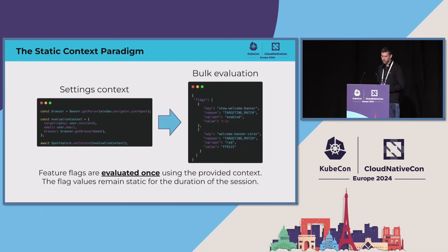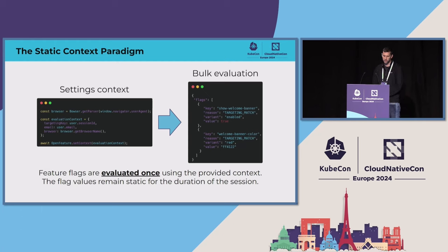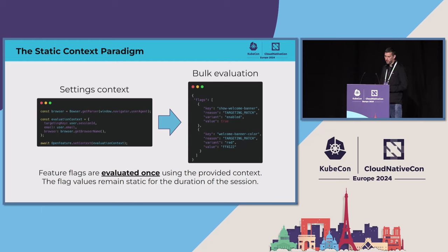In Open Feature, we call it evaluation context. On web or mobile, evaluation context typically remains consistent for the duration of the user session. It allows us to perform async operations early and cache the results. In this example, we're setting the user session, email, and browser in the context. The Open Feature SDK then bulk evaluates all the related feature flags and stores the results in the client until the context or the feature definition is modified. Notice that all the context defined is unlikely to change for the duration of the session.